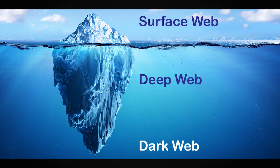The internet can be referred to as an iceberg. At the tip of the iceberg is the surface web. The second part is the deep web, and the third part is the dark web. The surface web is only 4% of the internet, and the rest 96% is the deep web and the dark web.